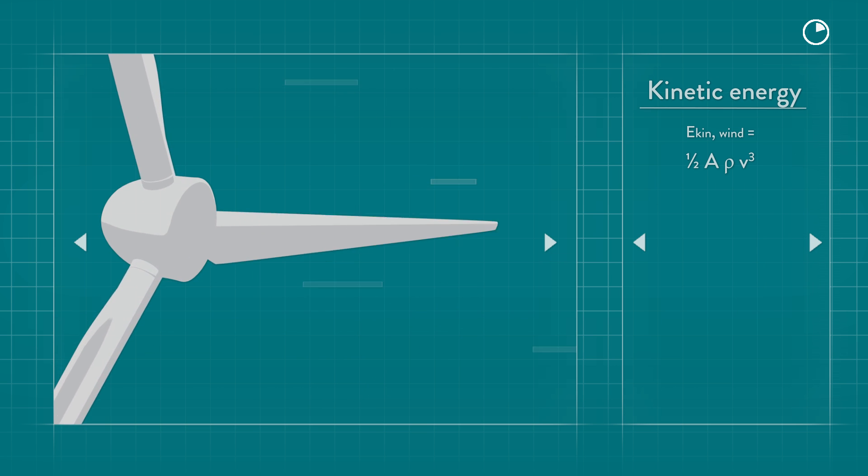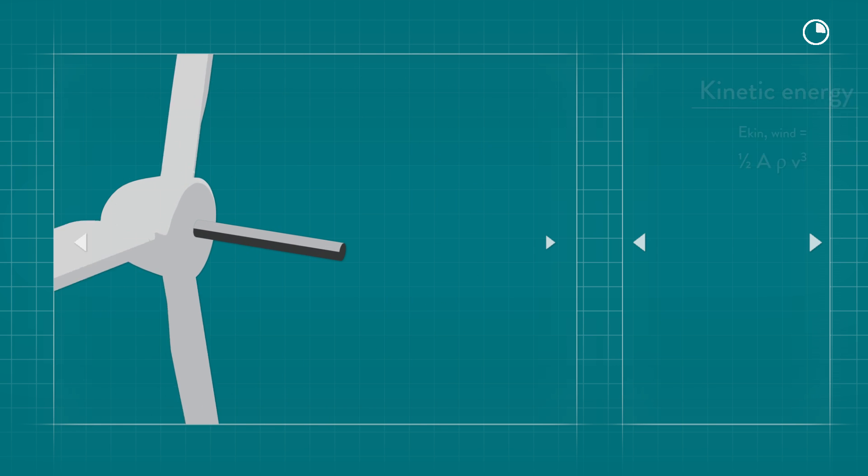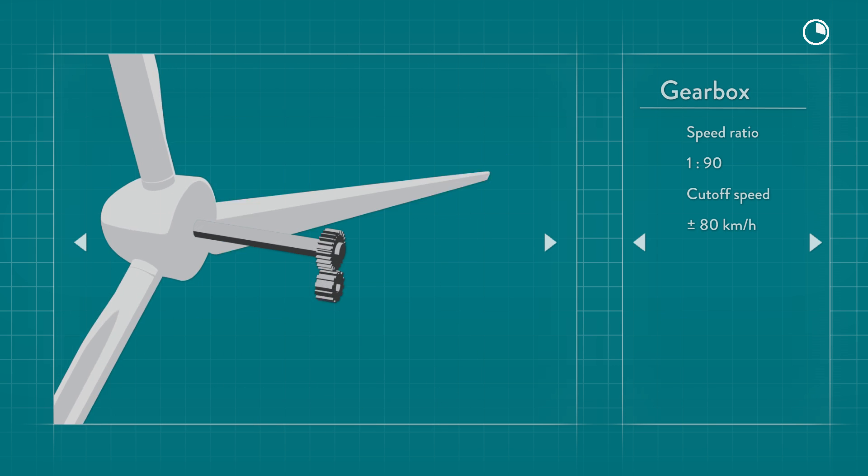The kinetic energy in the wind causes the blades to rotate. The rotor drives a low-speed shaft and by using a gearbox the speed of the shaft is amplified.